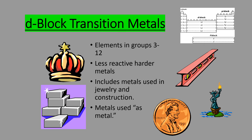Next we have the D-block. Even though they're in different groups, we combine them into a whole family: the transition metals. Those are elements in groups 3 through 12. Transition metals are less reactive and they're harder metals. They're called transition metals because their number of valence electrons can change — for example, iron can have two valence electrons or it can have four. These are the metals we think of for jewelry and construction, unlike sodium or lithium, which are also metals but in group 1.